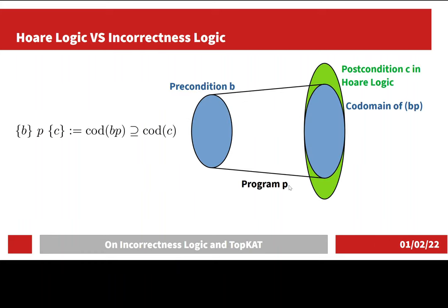This exactly reflects the semantics of Hoare logic, where the postcondition is seen as a correctness specification, and Hoare logic states all the output of B needs to fall in the correctness specification, therefore the codomain of BP is contained in the postcondition C.